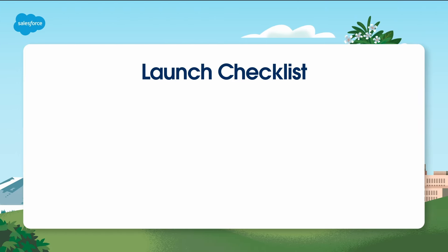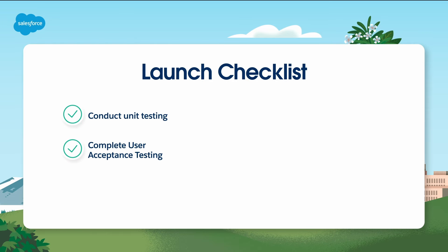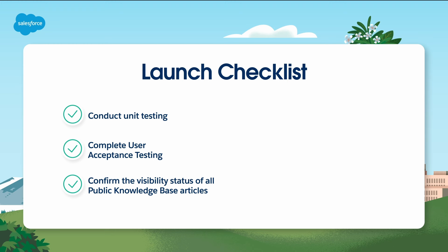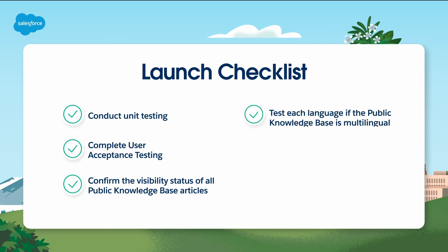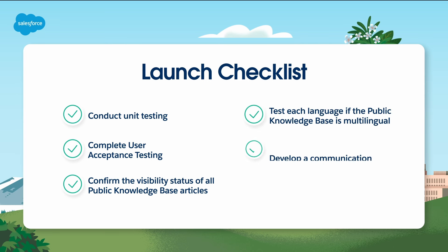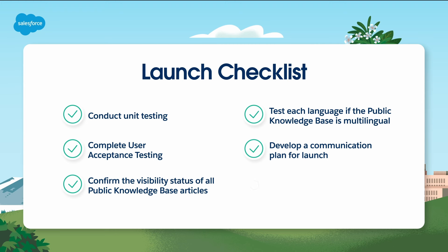Before we launch the Help Center, let's run through this checklist to ensure everything is in order. Conduct thorough unit testing. Complete user acceptance testing. Confirm the visibility status of all articles on the public knowledge base, ensuring your articles contain no sensitive or proprietary information. Test each language if your public knowledge base supports multilingual content. Develop your communication plan for the launch internally and externally. Confirm the completion of end-user training, whether through documentation, videos, or links to recorded webinars.